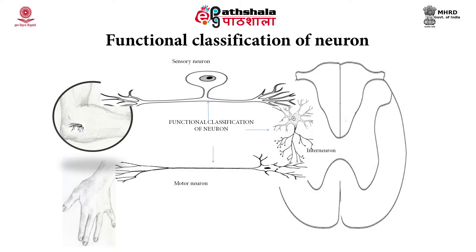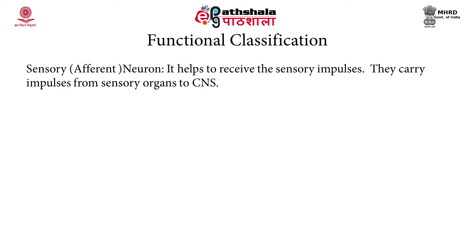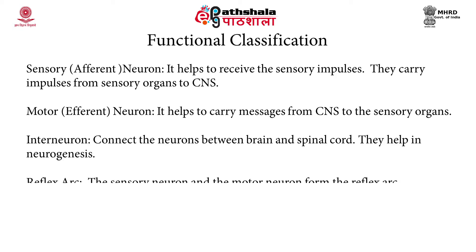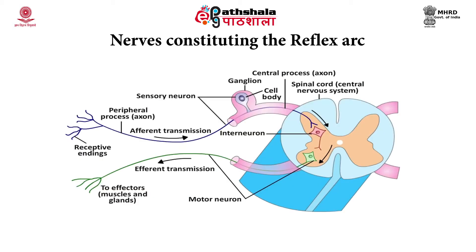In the functional classification, neurons that receive messages are called sensory or afferent neurons. Motor neurons are the efferent neurons which carry the message from the brain to the effector, such as a muscle. Interneurons connect the sensory neurons with the motor neurons. In a reflex arc, a sensory neuron, interneuron, and motor neuron are all connected to complete the arc.